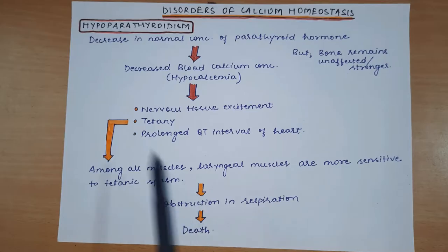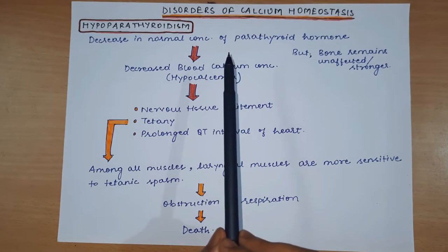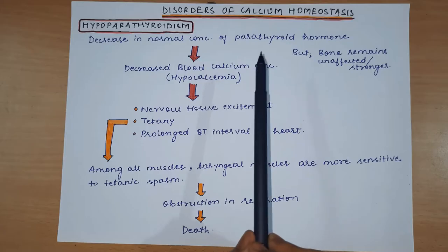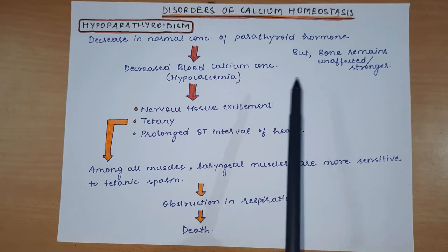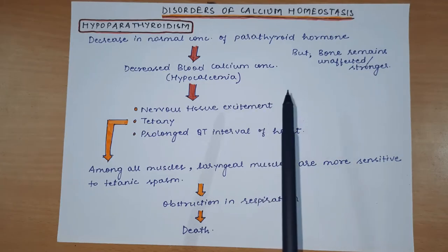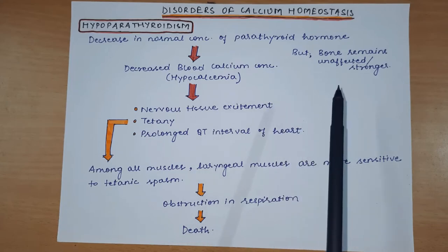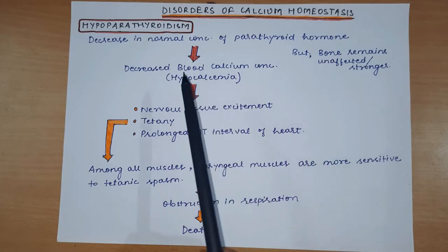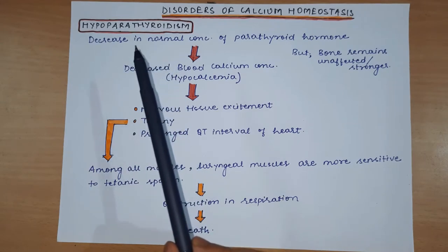Finally, it can lead to death. So this was about hypoparathyroidism - blood calcium concentration is decreasing because the amount of parathyroid hormone is less. But we know that bone will be unaffected because parathyroid hormone normally increases the release of calcium and phosphate from bone. If parathyroid hormone is low, bone resorption will not increase, bone will remain normal and stronger. The effect will be that blood calcium concentration will decrease, causing hypocalcemia and its features.